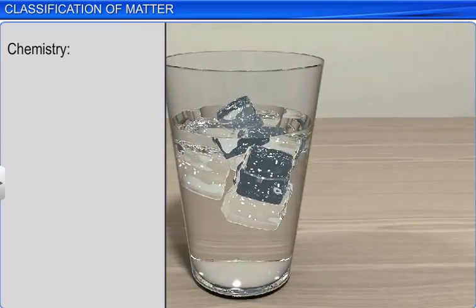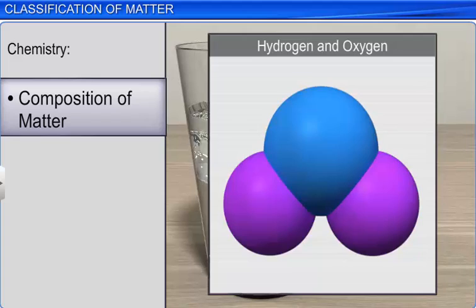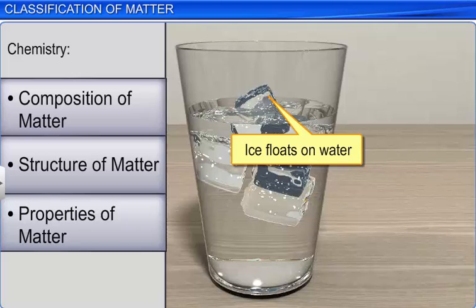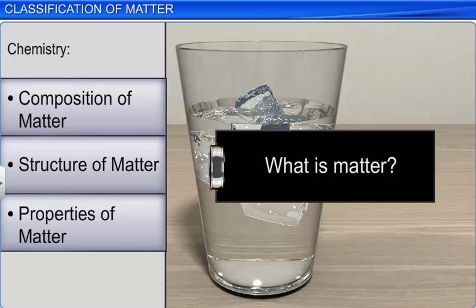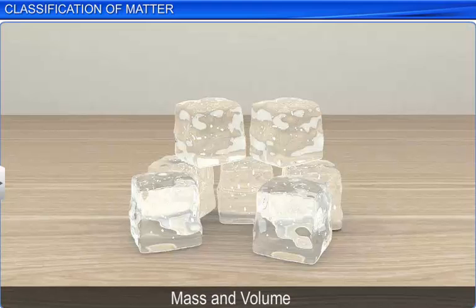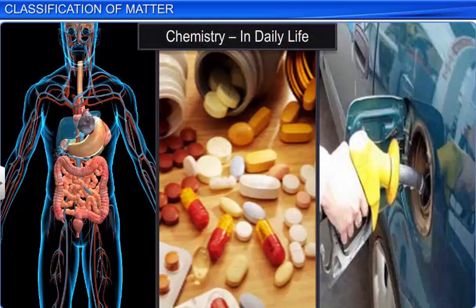Chemistry is the branch of science that deals with the study of the composition, structure, properties of matter and changes that matter undergoes. What is matter? Anything that has mass and occupies space is known as matter. Before we learn more about matter, it is important that we know the importance of chemistry in our daily life.